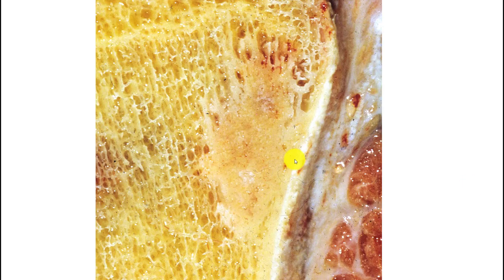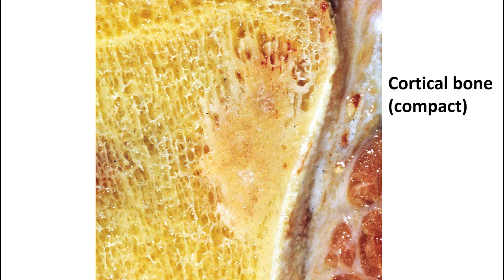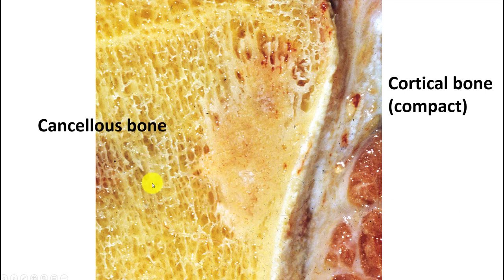Within bone there are essentially three layers. There's cortical bone, also called compact bone, because it's thick and very dense. There's cancellous bone that looks like honeycomb with a spongy appearance — that's where you tend to see a lot of marrow. And then there's the outer layer that covers the surface of the bone, referred to as the periosteum.